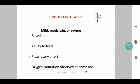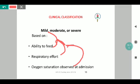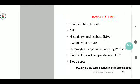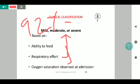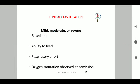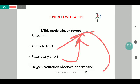We classify bronchiolitis clinically into mild, moderate, and severe based on three components: ability to feed, the respiratory effort of the child, and the saturation observed at admission. In mild bronchiolitis, the child feeds adequately with decent respiratory effort and maintaining saturation. In moderate bronchiolitis, feeding is slightly impaired with slight distress, and saturation is borderline — the cut-off is 92%, so less than 92% is defined as hypoxia. Severe bronchiolitis involves refusal of feeds, significant respiratory distress, and saturation not maintained, requiring additional support.